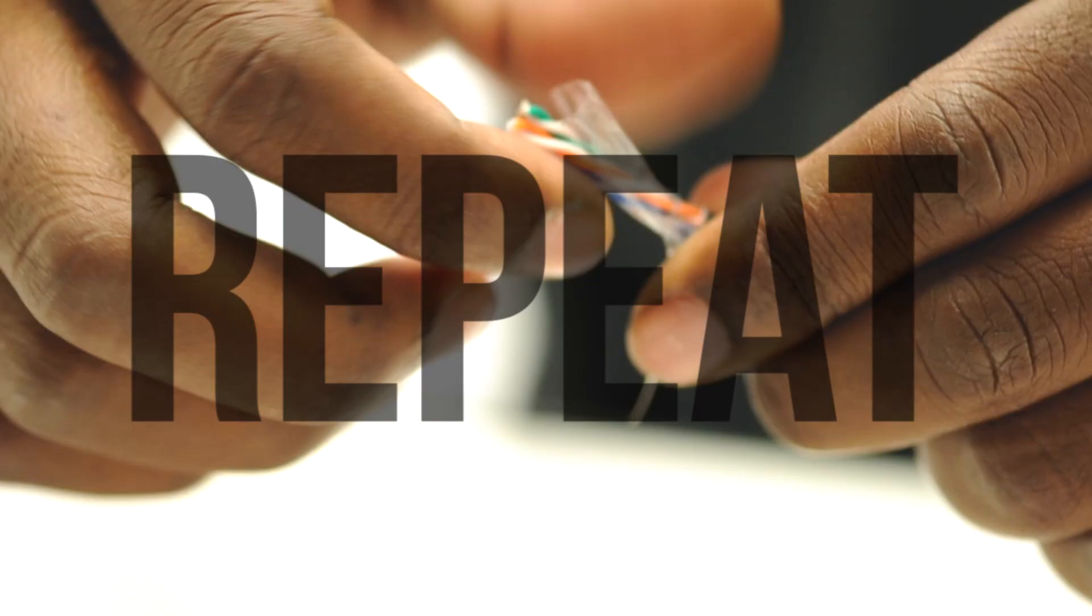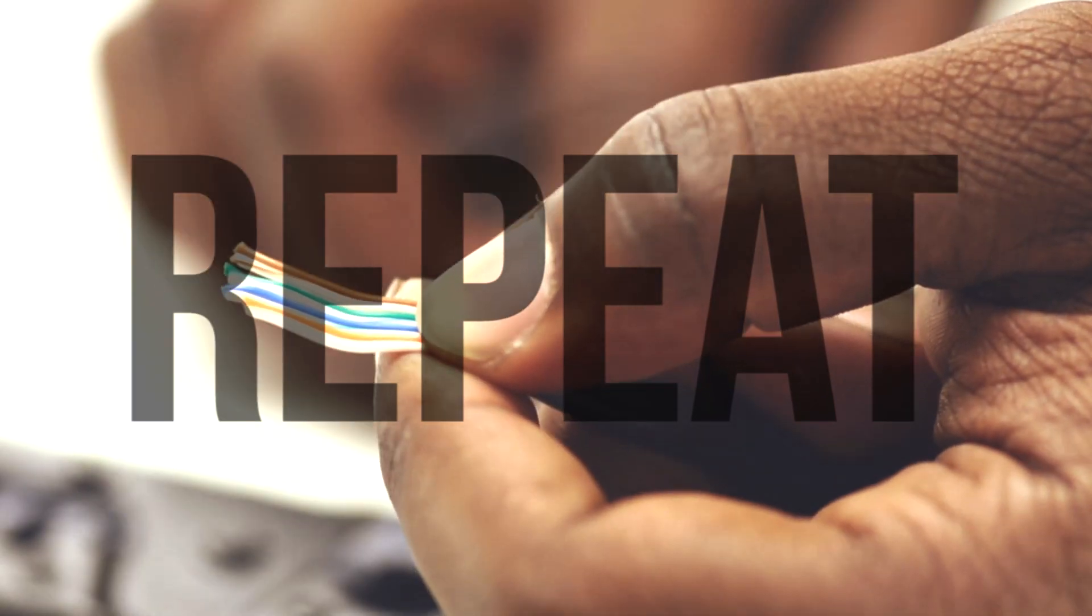To make a shielded patch cable, repeat all of these steps on the other side.